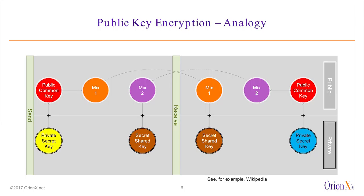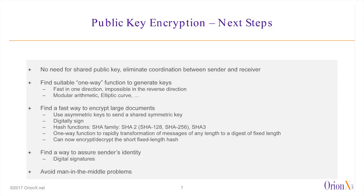The next step is to find a way so that the sender and receiver don't have to coordinate like we just did — all I need is your public key, my public key, and my private key. You're looking for a suitable so-called one-way function: a function that is really easy to compute in one direction, but almost impossible to reverse — like our mixing of paints. That's where mathematicians go to get these things. There's also a newer one called the elliptic curve algorithm, which is increasingly moving in that direction.